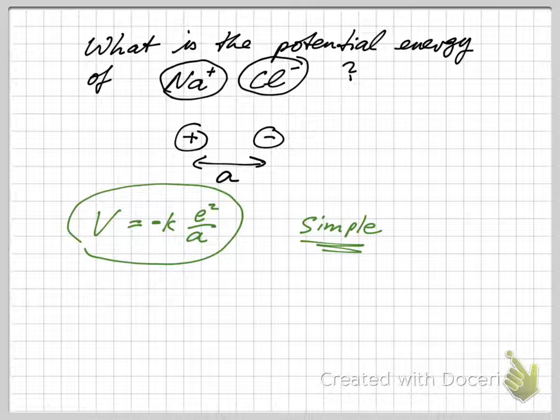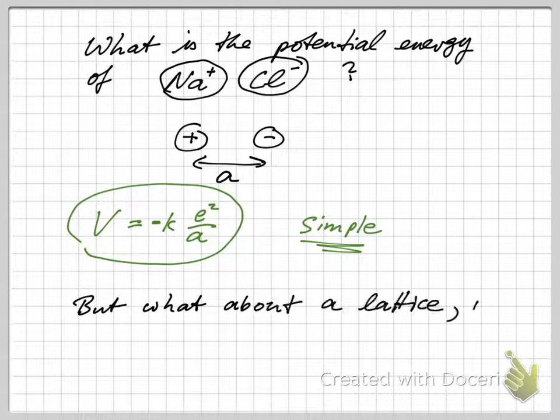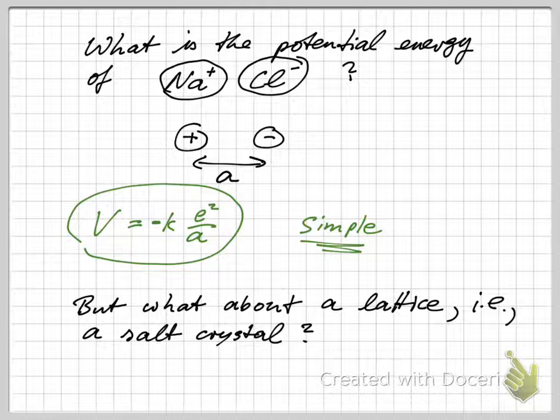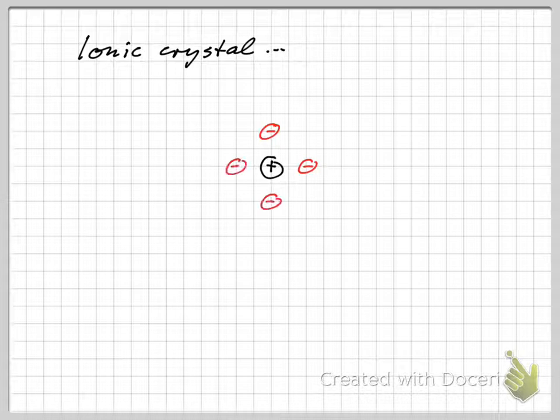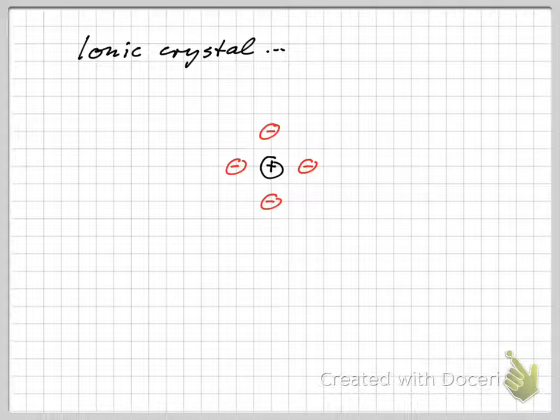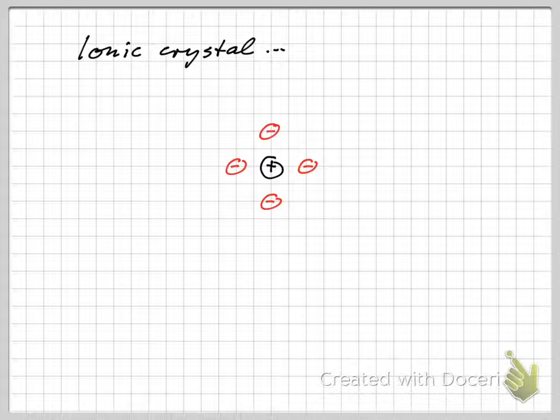We have an effectively positive, singly positive ion in proximity to a singly negative ion. Let's say the separation is a, and we can immediately write down what the potential energy of this configuration would be, namely it's just minus ke squared over a. Very simple. But let's take the next step: what about a lattice, a salt crystal?